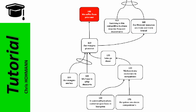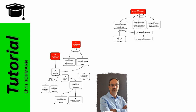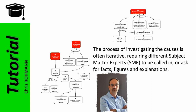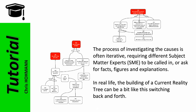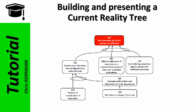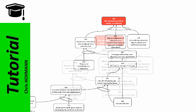Financial resources are more and more limited because inefficiencies and wastes burn resources without gain. You may wonder why I switch from one branch to another - first because I don't want you to get bored, and second because in reality this process of investigating causes is often iterative, requiring different subject matters to be called in for facts, figures, and explanations. In real life the building of a current reality tree can involve switching back and forth. Continuing to investigate the lack of alignment, managers define their own objectives for their department.